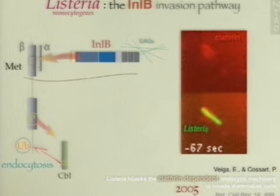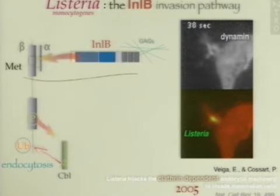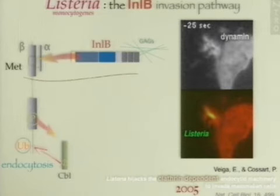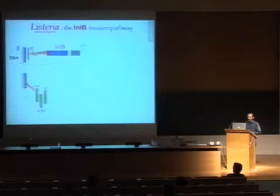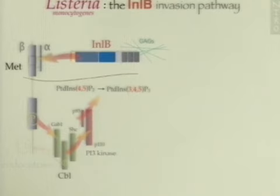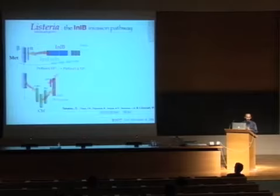Esteban Vega in the lab had shown that Listeria uses the endocytic machinery in order to invade cells. Part of this machinery includes clathrin and also dynamin. All these molecules are precisely rearranged at the site of bacterial entry in order to promote efficient internalization. Cbl is not the only molecule recruited by MET; there are several adapters, including Gab1 and Shc, and they are involved in the recruitment of an important lipid kinase, the type 1 PI3 kinase, which is involved in the formation of PIP3 at the site of bacterial entry. Stephanie Cevaux in the lab had shown that the reorganization of PIP3 in cholesterol-enriched rafts is very important for the signaling cascade downstream of the PI3 kinase.